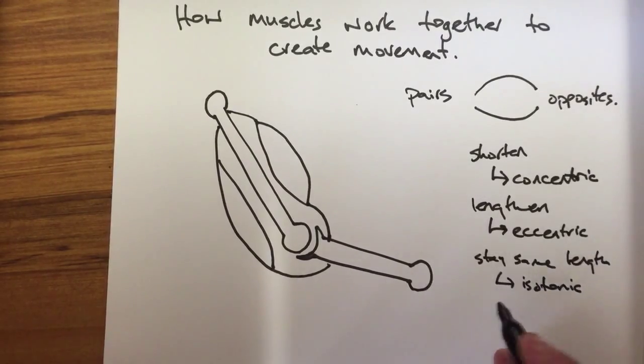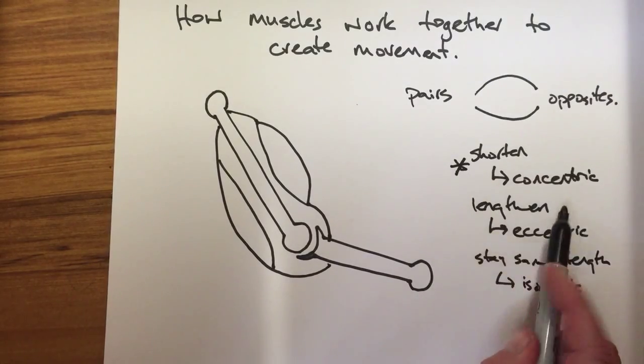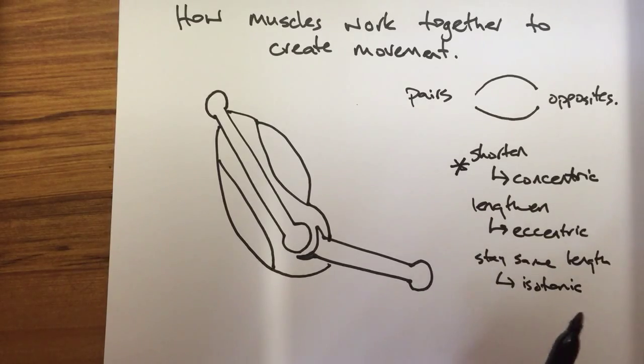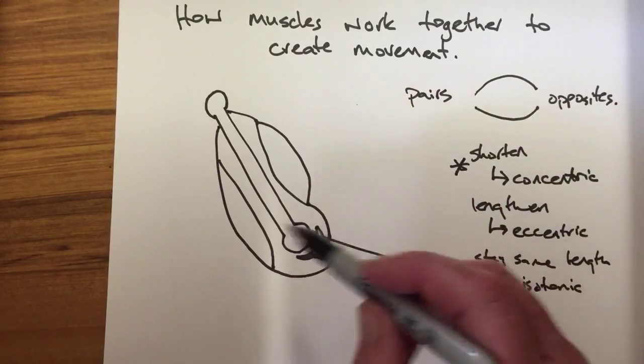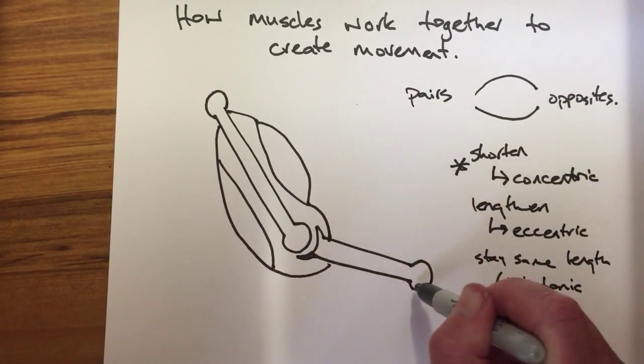The main one we are going to concentrate on is muscles shortening when they contract, which is concentric contraction. So think about when you flex your bicep muscles. You can physically see your bicep shortening and bulging. So let's have a look here. If this was a bicep and tricep humerus moving along the ulnar and radius.